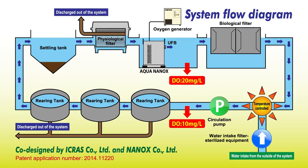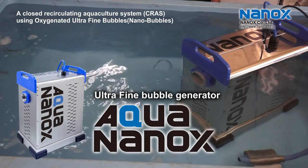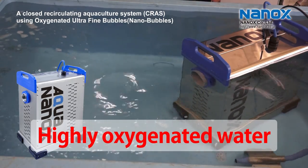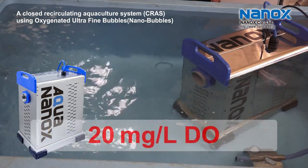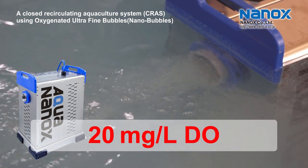This figure shows the system flow diagram. In the CRAS, rearing water is reused by recirculating filtration, and additional water is supplemented as needed to compensate for evaporation. The defining characteristic of our system is using AquaNanox, an oxygenated ultrafine bubble generator, for controlling the DO level throughout the whole CRAS. Rearing water, once passed through AquaNanox, becomes highly oxygenated water containing oxygenated ultrafine bubbles with 20 milligrams per liter DO.